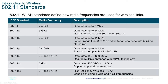802.11a is an improvement at the 5 GHz level, supporting data rates up to 54 Mbps, and is not interoperable with the 802.11b or 802.11g standards. 802.11b supports 2.4 GHz and data rates up to 11 Mbps. It has a longer range than 802.11a and is better able to penetrate building structures.